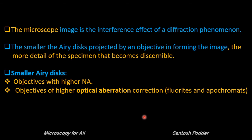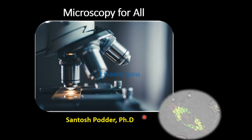To summarize what we learned today: the microscope image is the interference effect of a diffraction phenomenon. Smaller the Airy disc, better the resolution, because more details of the specimen become discernible to our eyes. To get a smaller Airy disc we can use objectives with higher numerical aperture, or objectives with high optical aberration corrections such as fluorites and apochromats. We will learn more about these different kinds of objectives in upcoming videos. Thank you for watching this video — stay tuned for my next videos.